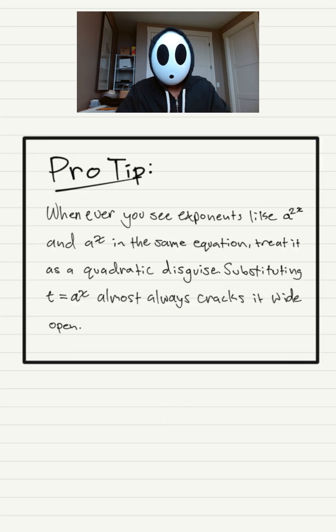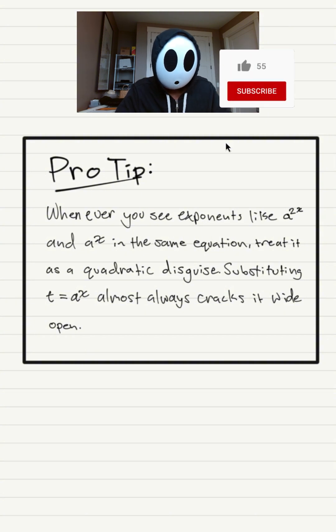And we're done. And here's the pro tip. Whenever you see exponents like a to the power of 2x and a to the power of x in the same equation, treat it as a quadratic in disguise. Substituting t equals a to the power of x almost always cracks it wide open.